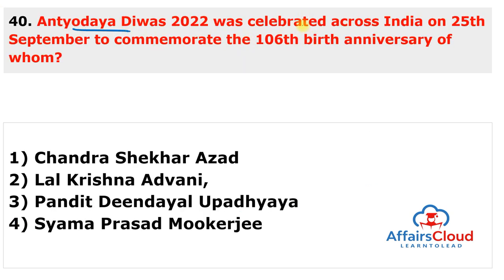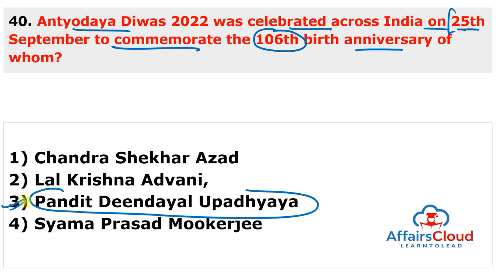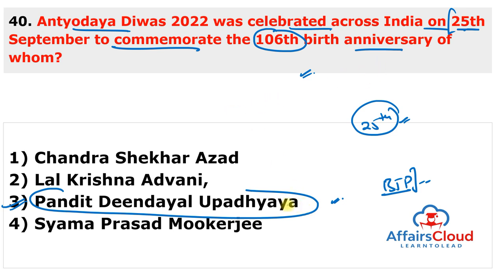Antyodaya Divas 2022 was celebrated across India on 25th September 2022 to commemorate the 106th birth anniversary of Indian politician Pandit Deen Dayal Upadhyaya, leader of the Bharatiya Jana Sangh and forerunner of the Bharatiya Janata Party. 'Antyodaya' means the rise of the last person, one of the concepts promoted by Pandit Ji. In 1940, he started the monthly publication 'Rashtra Dharma,' broadly meaning national unity.